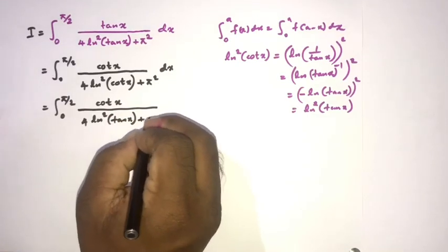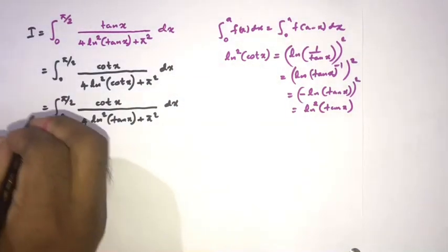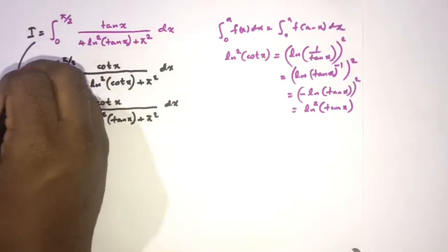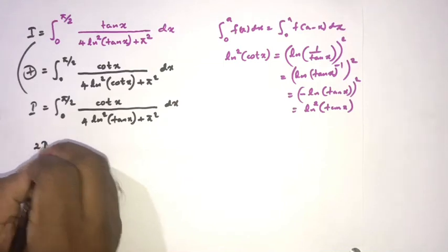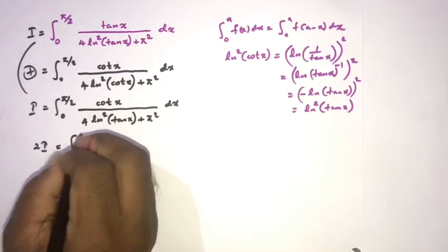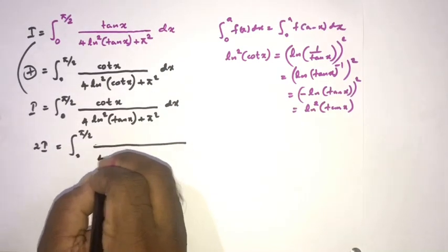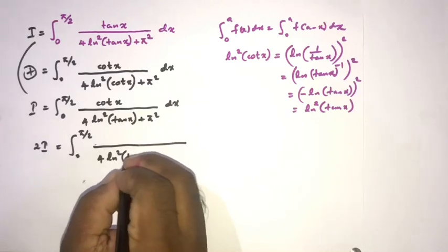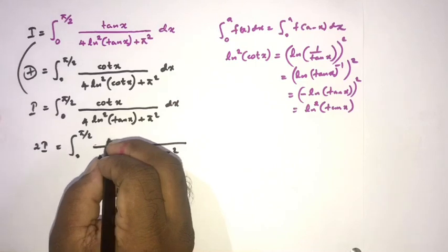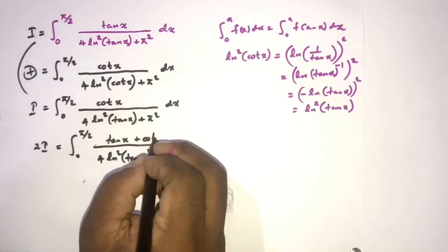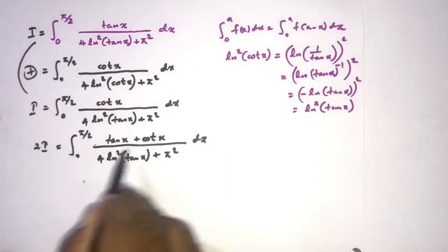Adding the two expressions for I, we get 2I = the integral from 0 to π/2 of [tan(x) + cot(x)] over [4·ln²(tan x) + π²] dx, since both share the same denominator.